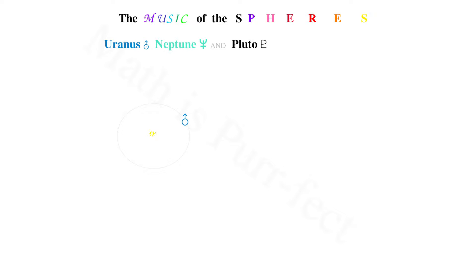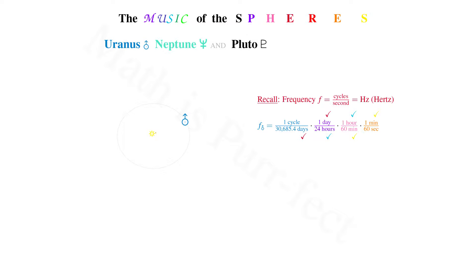Beginning with the orbit of Uranus, we recall that to calculate frequency, the units must be expressed in cycles per second. The orbital period of Uranus is one cycle every 30,685.4 days. Translating days into hours, hours into minutes, and minutes into seconds, then reducing the units of days, hours, and minutes, we arrive at a frequency of one cycle every 2,651,218,560 seconds, or 3.77185 times 10 to the minus tenth hertz.